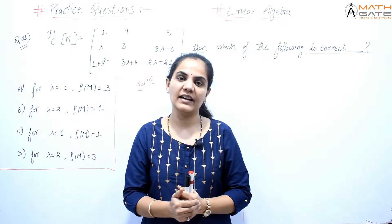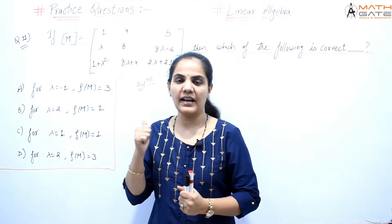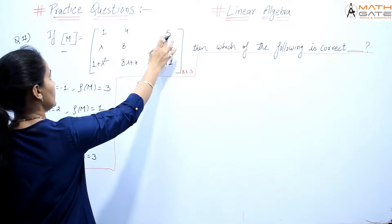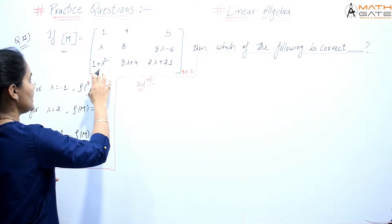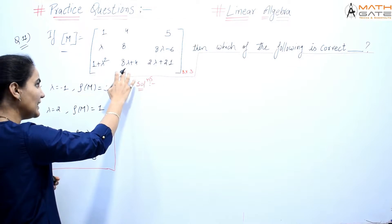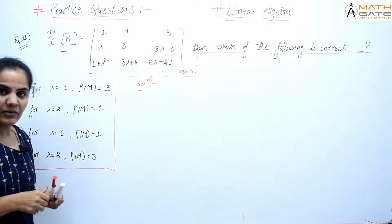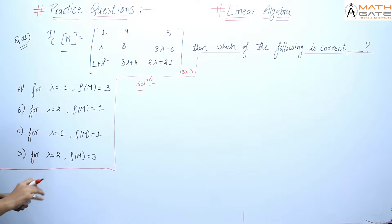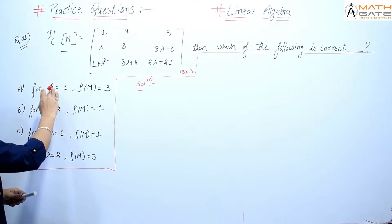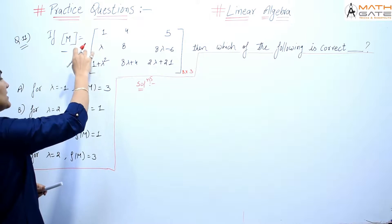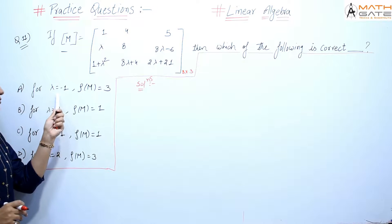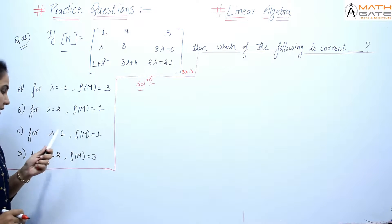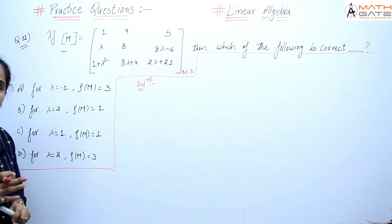Hello students, welcome to Math Gate. Let's discuss question number 11 of the practice questions. The question is: if M is a 3x3 matrix equal to [1, 4, 5; λ, 8, 8λ-6; 1+λ², 8λ+4, 2λ+21], then which one of the following is correct? The options give specific lambda values and ask for the rank: for λ=-1 rank is 3, for λ=2 rank is 1, for λ=1 rank is 1, and for λ=2 rank is 3.